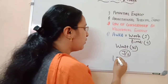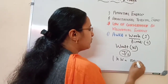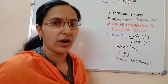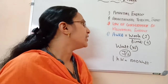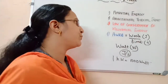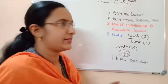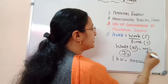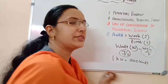1 kilowatt is equal to 1000 watt. Another equation to find mechanical power is potential energy divided by time, that is mgh divided by time taken. That is also another equation to find power.